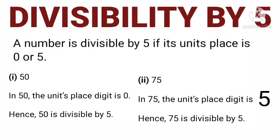A number is divisible by 5 if its units place or ones place digit is 0 or 5. For example, 50: the units place digit is 0, so 50 is a multiple of 5. And 75: the units place digit is 5, so 75 is also a multiple of 5.